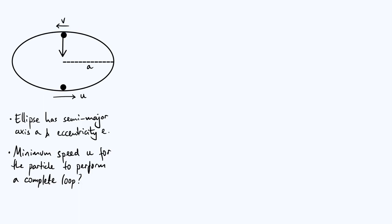Let's also draw on the forces acting on it. There is going to be a weight, as always, pulling it down, and in general there can be a normal contact force between the particle and the track as well — so let's call our weight mg and our normal contact force N. It's also going to be helpful to define an additional parameter of the ellipse: a vertical line from the center of the ellipse directly up to the highest point, called the semi-minor axis B.